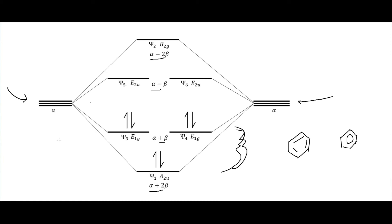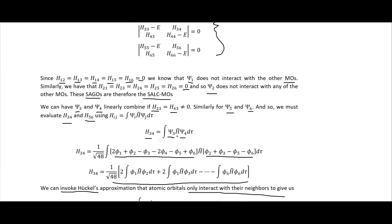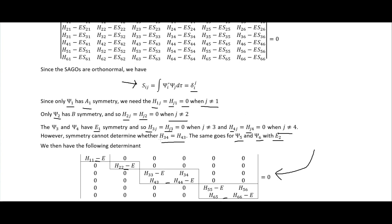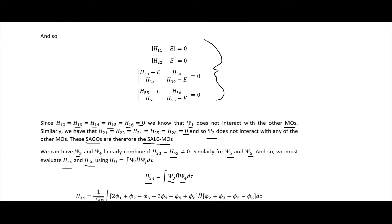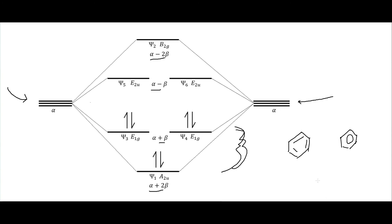In the next couple of videos I'll be looking at a conjugated linear molecule, 1,3-butadiene. For that system, the molecular orbitals will interact in a way that means we won't have the luxury of reducing the determinants to one-dimensional ones, so something a little different will be going on. I hope you found this video helpful and I'll see you in the next one.